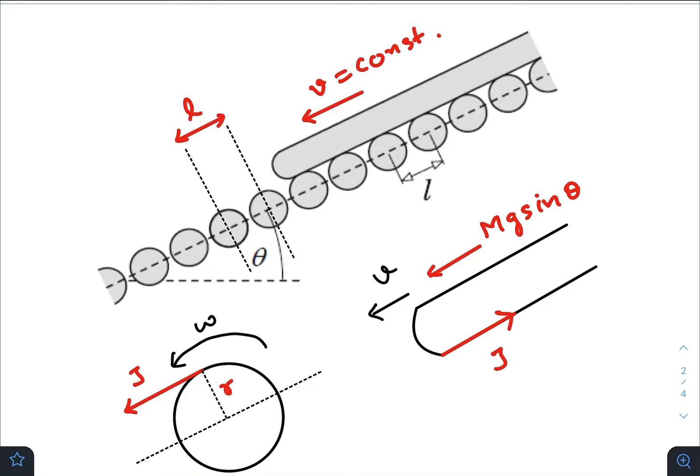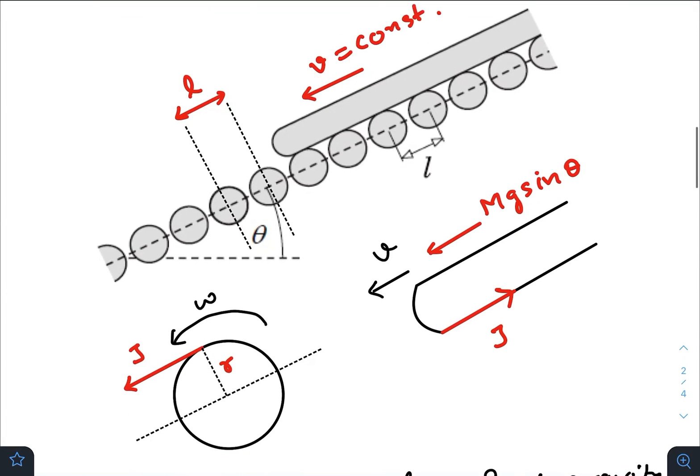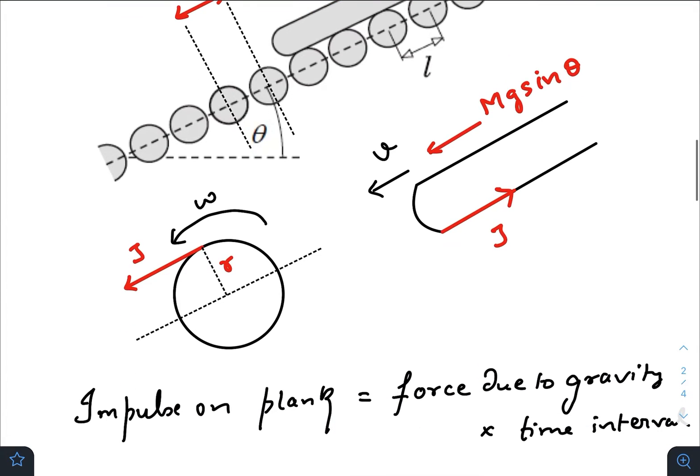So let us consider that v is that steady speed. At any instant, at any one of the rollers, an impulsive force J is being applied on the tangent. Let R be the radius of the roller.